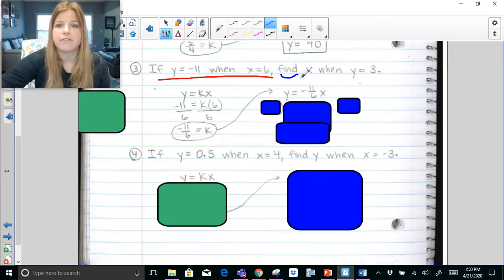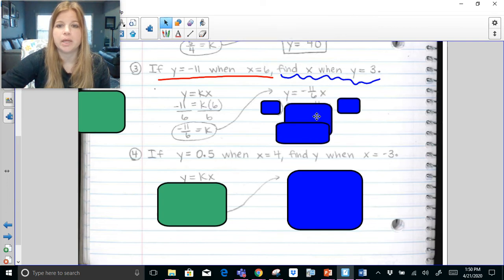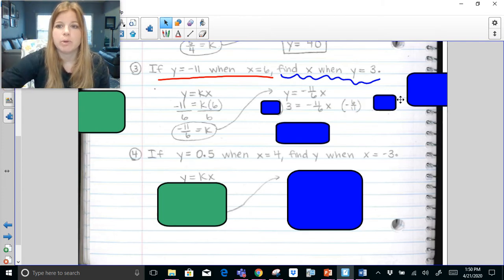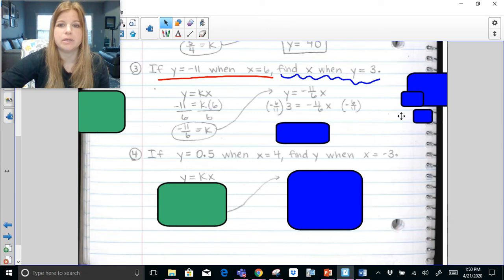My second part says find x when y equals 3. So I'm going to go ahead plug in a 3 for my y. Now remember solving this one step equation. To undo the negative 11 sixths, we multiply both sides by the reciprocal of negative 6 elevenths. negative 6 elevenths times 3 is negative 18 elevenths. Last one.